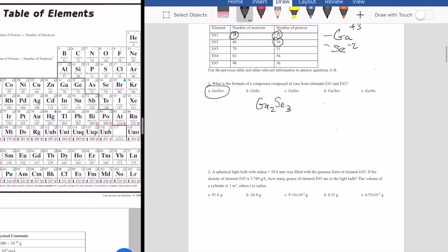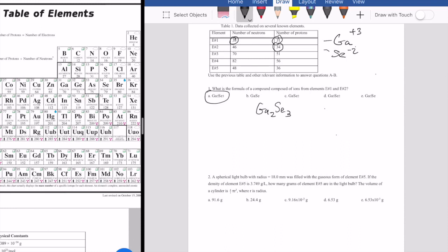Now let's move on to the second question, which is also based on that table here. It says that you have a spherical light bulb. So your light bulb looks something like this, right? It has a radius that's 18 millimeters. And then the question is it's filled with this gas from element five. If the density of the element is 3.749 grams per liter, how many grams are actually filling the light bulb?